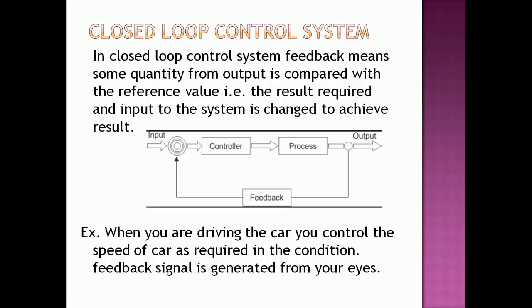The closed loop control system is divided into two parts: positive feedback and negative feedback. In a closed loop control system, some part of the output is fed back to the input. A feedback network is used to generate a feedback signal from the output to the input. The reference input is the desired output we require.